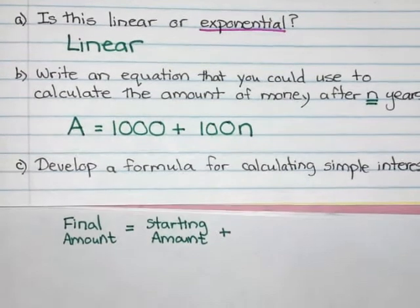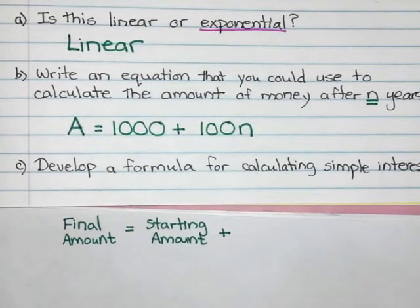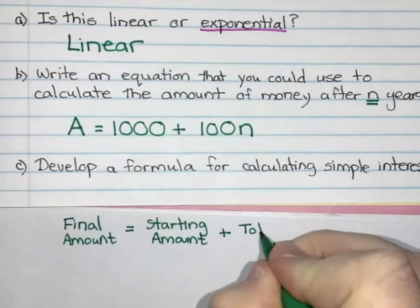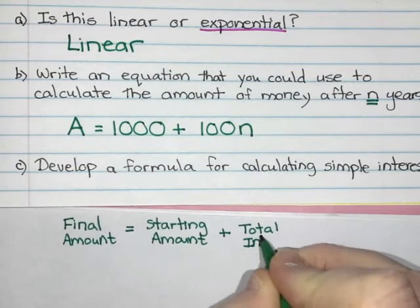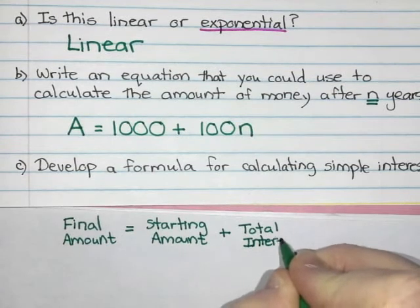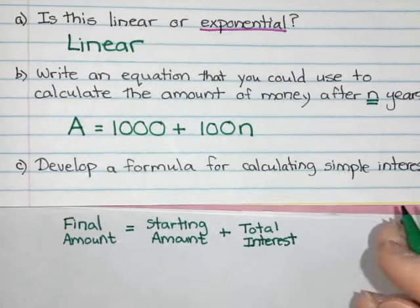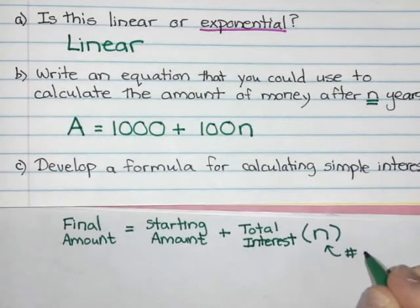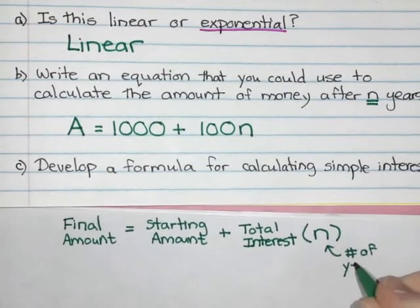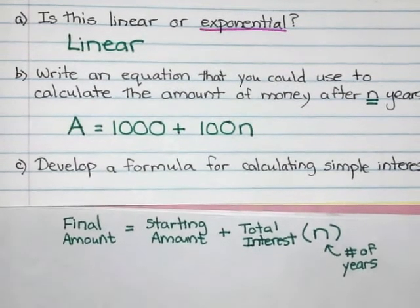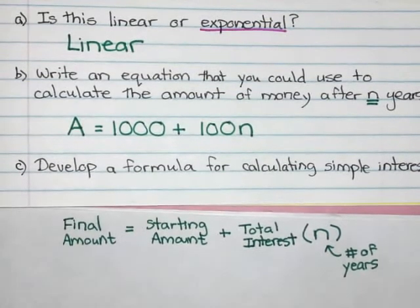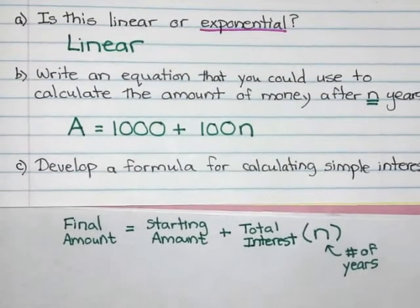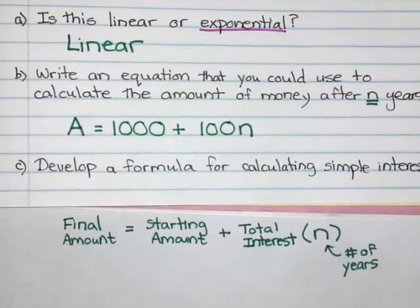Plus where did that $100 come from? That $100 was my total interest that we earned every time. So I earned $100 interest every single time. And then that's times N, which was the number of years. Now I'm not going to expect you to come up with this on your own. That's why we're doing it together. So don't panic about that. But we are going to try to come up with a formula we can use that would help us calculate anytime we want to calculate something.